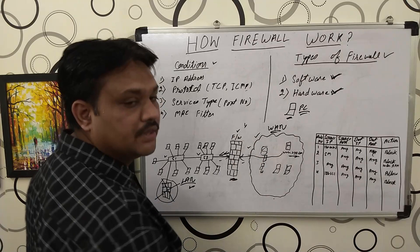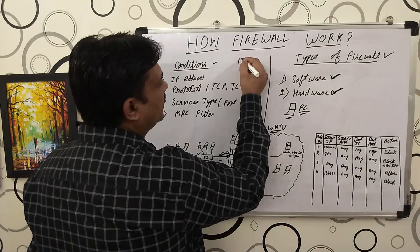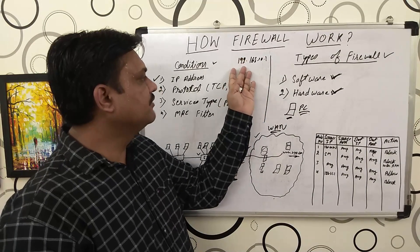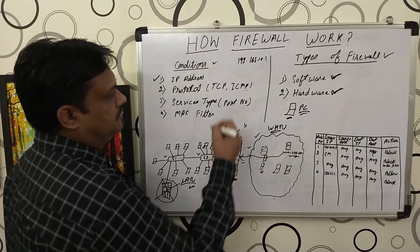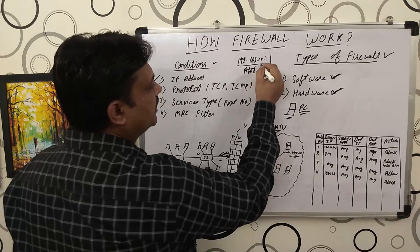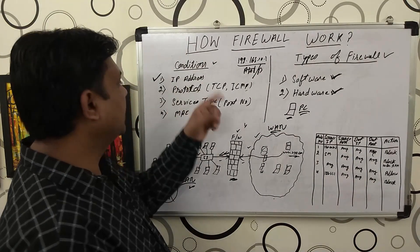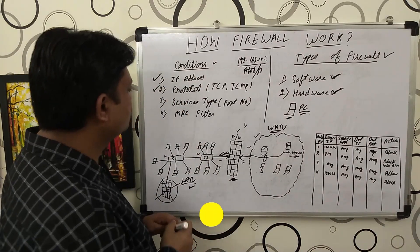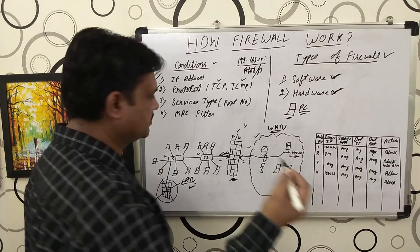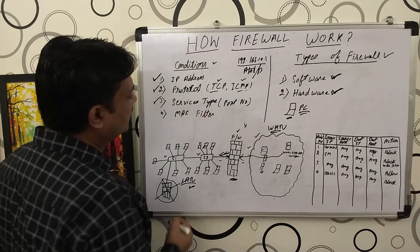Now let's understand the conditions you can configure in the firewall. First is IP address — for example, if a packet is coming with source IP 192.168.10.1, and you have given the condition 'allow' or 'block', the firewall will act accordingly. So you can filter traffic based on IP address. Second, you can filter packets based on protocol — TCP, ICMP, etc.